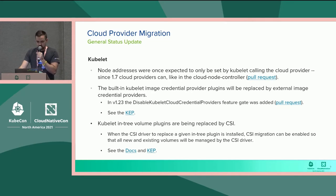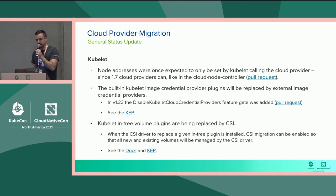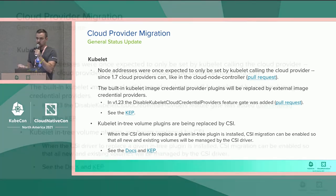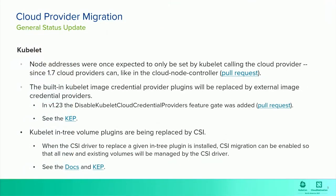Another aspect of cloud provider-related code in Kubelet would be the external image credential providers. I think this is going beta in 1.23. We're adding a feature gate to push people along, which will start out being disabled but will eventually become enabled, which will then disable the in-tree credential plug-ins. So when that reaches beta, you'll have to actually flip that feature gate to false if you want to continue using it. Take a look at that KEP.